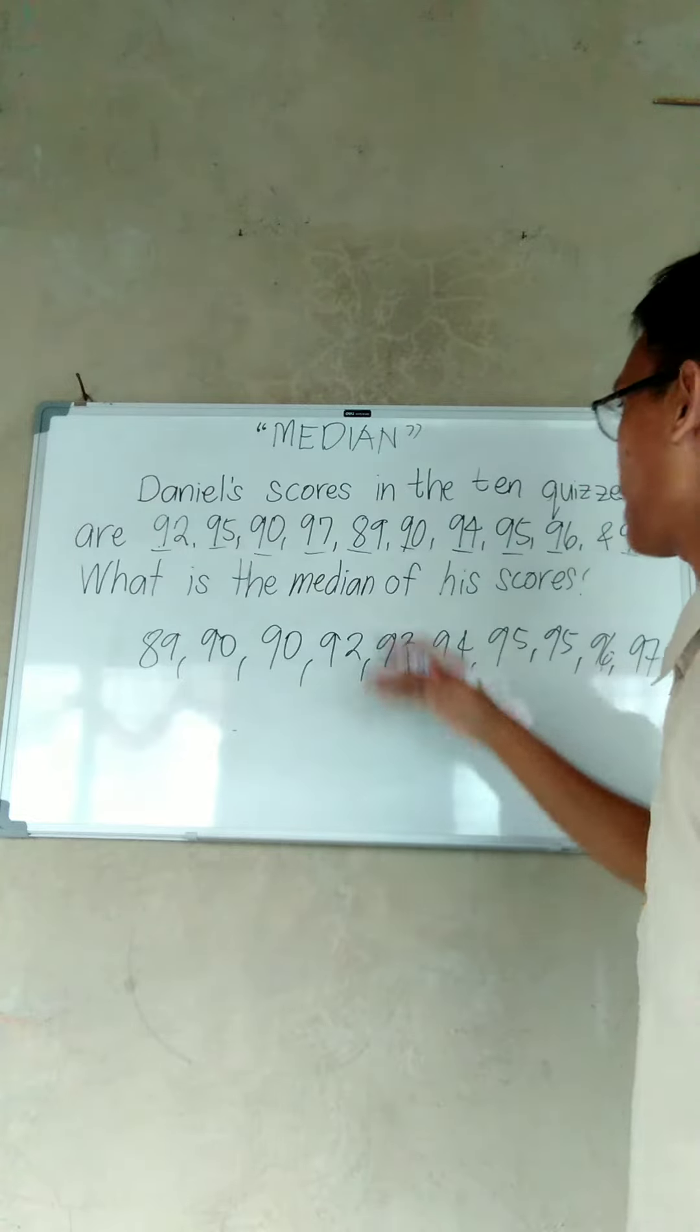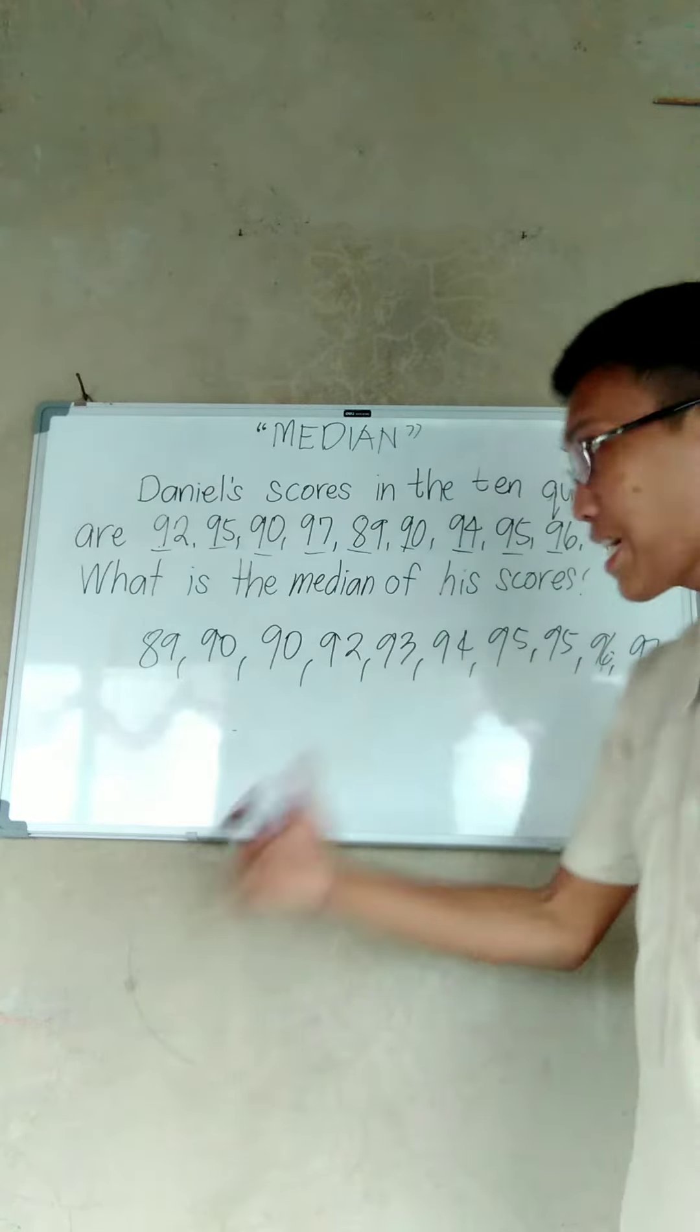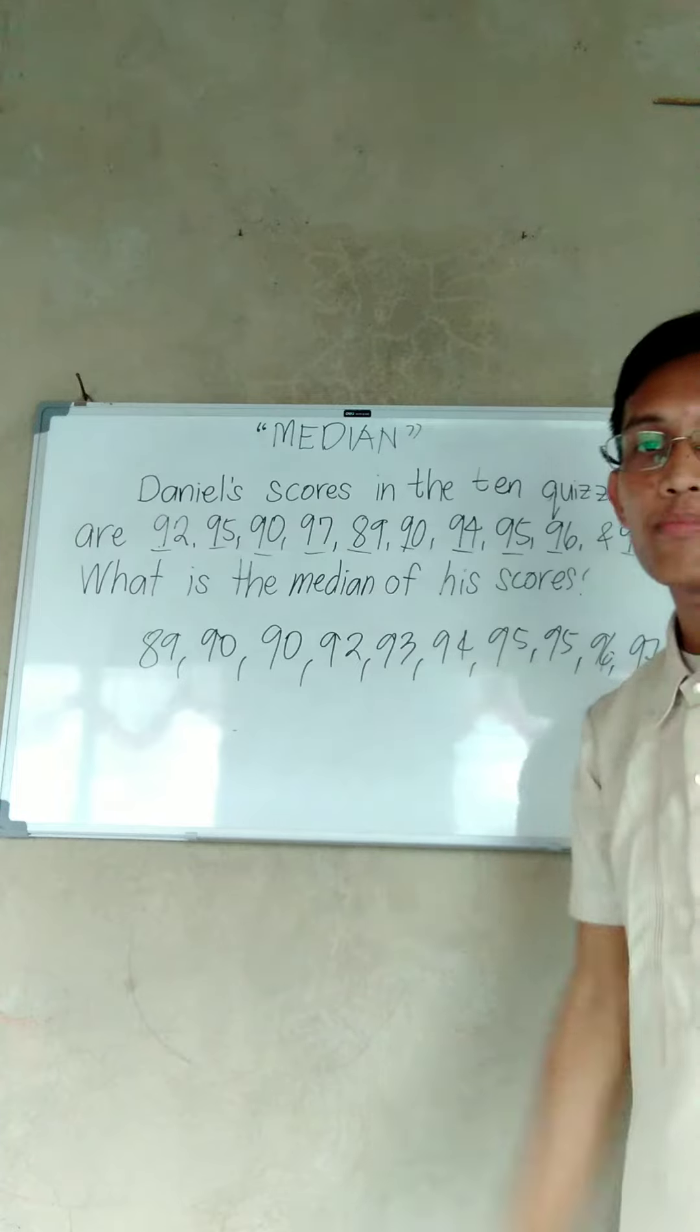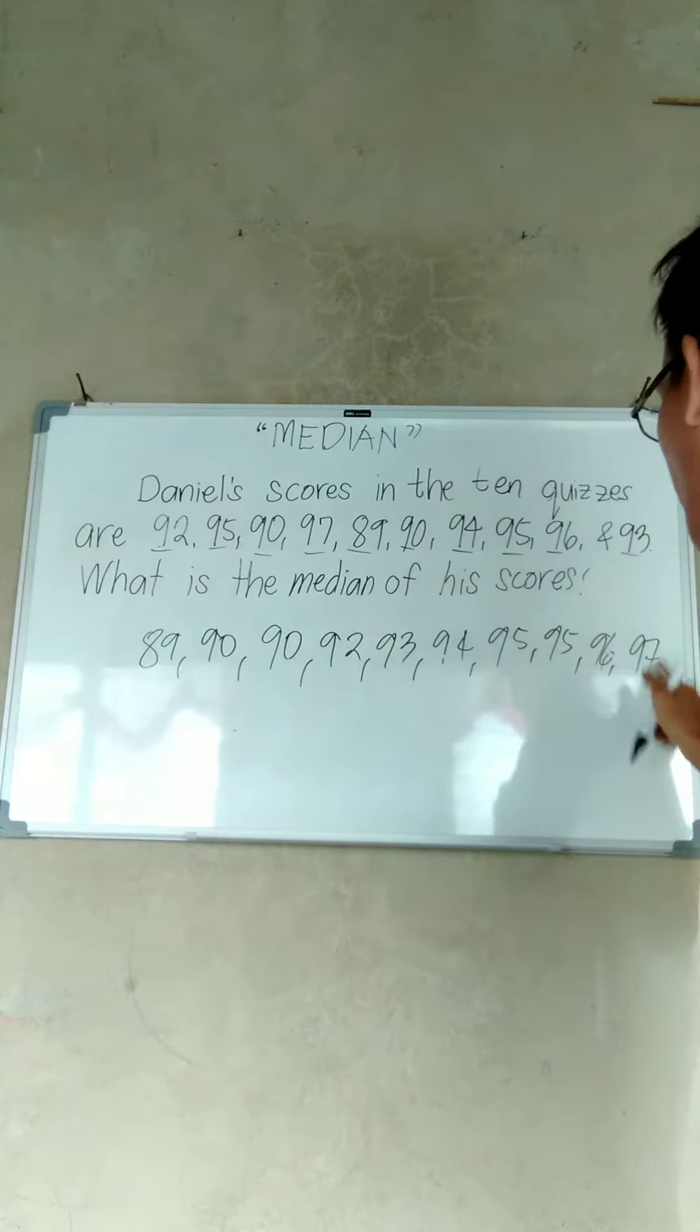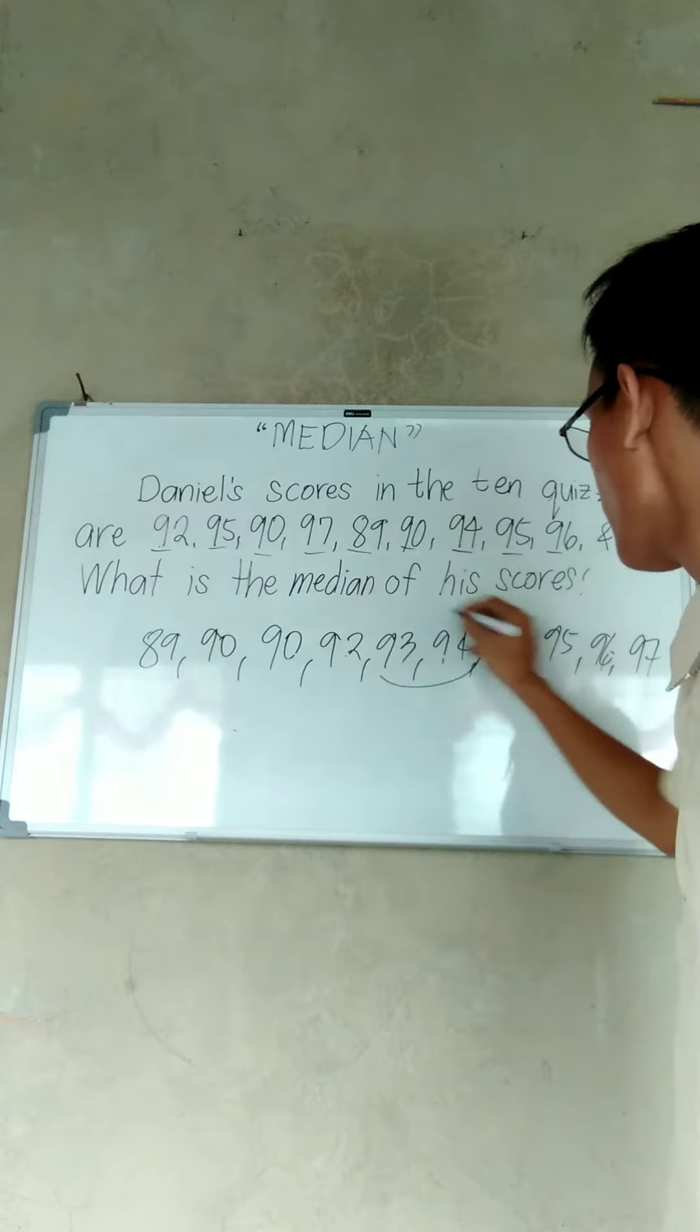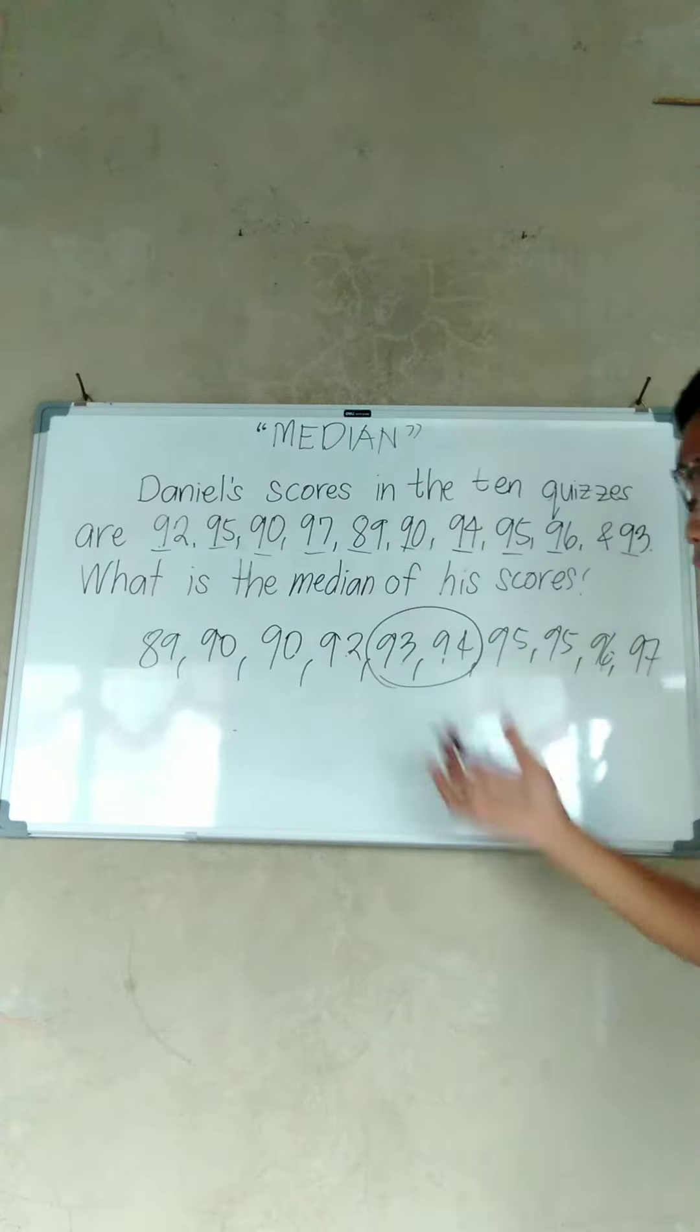Now, after arranging the scores from the lowest to the highest, you have to find the middlemost number. So let's count: 1, 2, 3, 4, 5, 6, 7, 8, 9, 10. So 1, 2, 3, 4, 5. These are the middlemost scores.